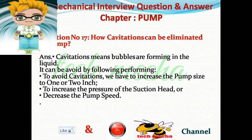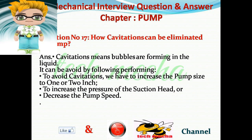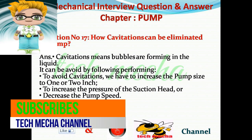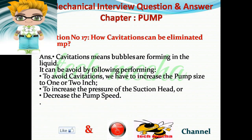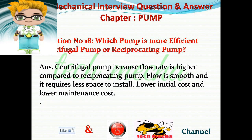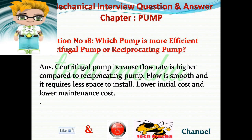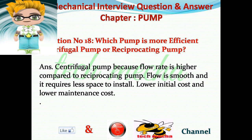Question number 17: How can cavitation be eliminated in a pump? Answer: Cavitation means bubbles are forming in the liquid. To avoid cavitation, we increase the pump size by one or two inches, increase the pressure of the suction head, or decrease the pump speed. Question number 18: Which pump is more efficient — centrifugal or reciprocating? Answer: Centrifugal pump, because the flow rate is higher compared to reciprocating pump. Flow is smooth, it requires less space to install, and it has lower initial cost and lower maintenance cost.